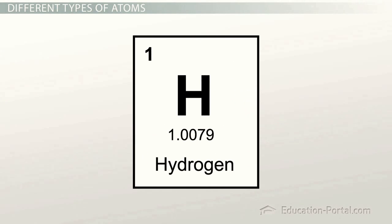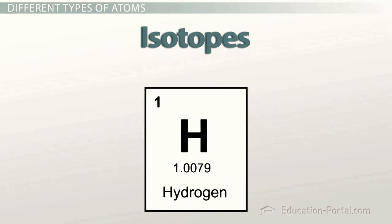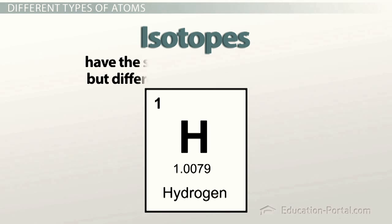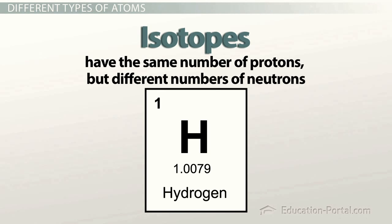We're going to use hydrogen as our example. Hydrogen has three major isotopes. Remember that isotopes have the same number of protons, but different numbers of neutrons.